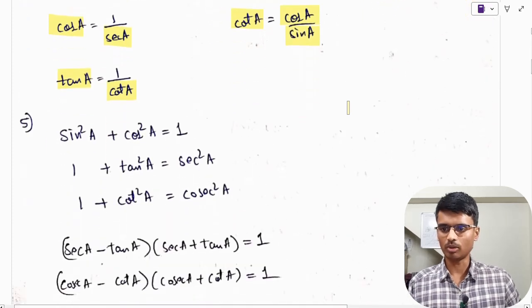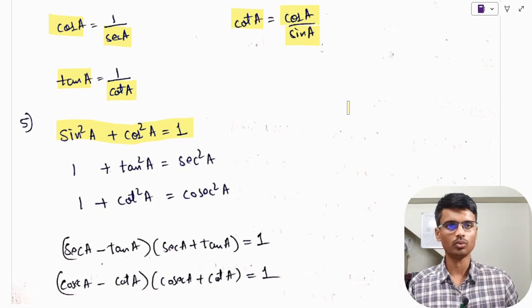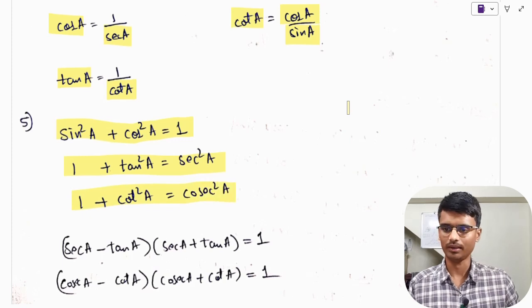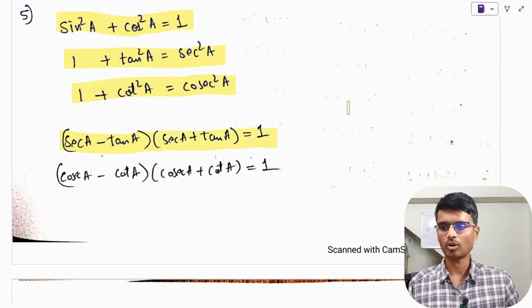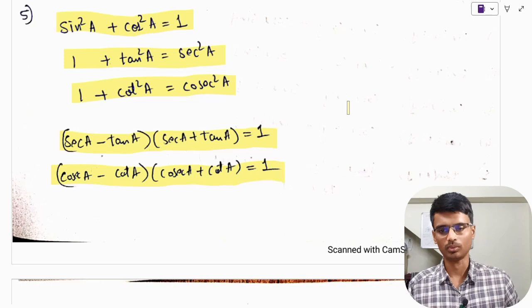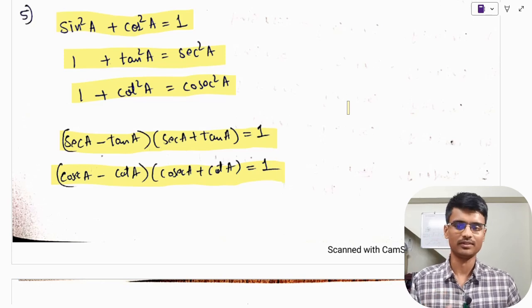Next, we have the trigonometric identities — very standard identities. Sin²A + cos²A = 1. 1 + tan²A = sec²A. 1 + cot²A = cosec²A. Additionally: (sec A − tan A)(sec A + tan A) = 1, and (cosec A − cot A)(cosec A + cot A) = 1. These are all the very basic formulae.